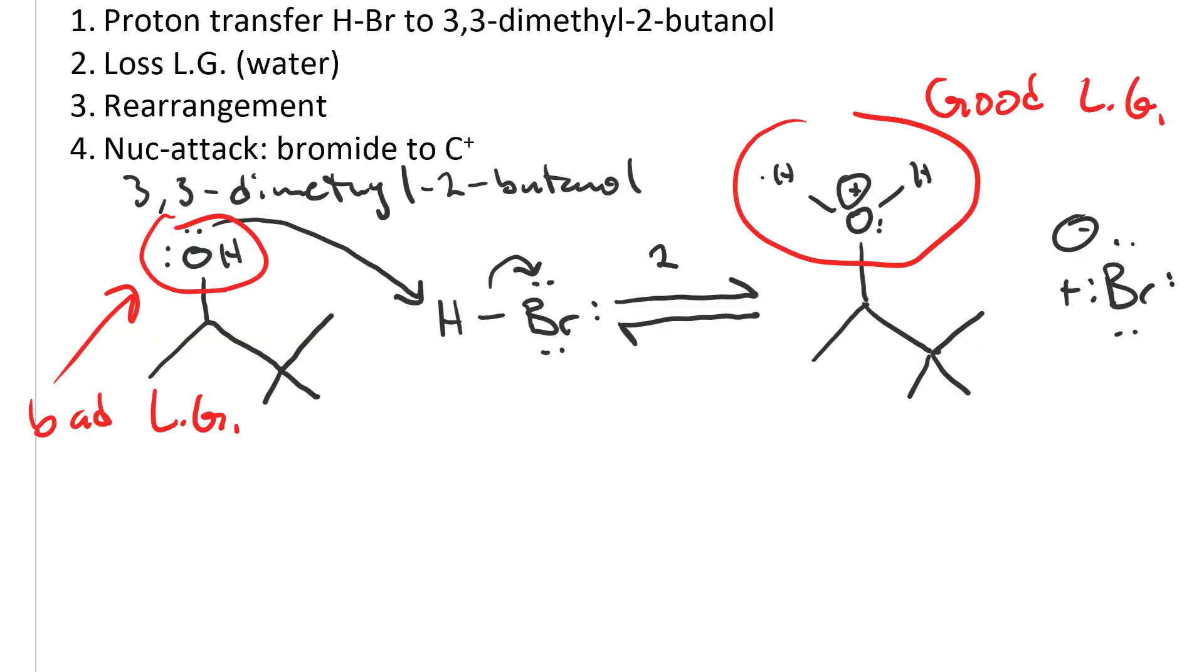The first reaction arrow we will record as step one, proton transfer. Now that we have a good leaving group, step two will be loss of the leaving group. One curved arrow, from the sigma bond to the leaving group.